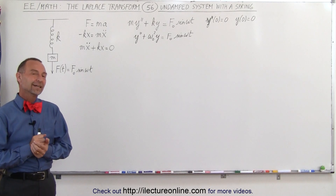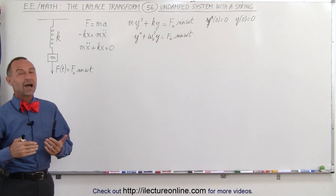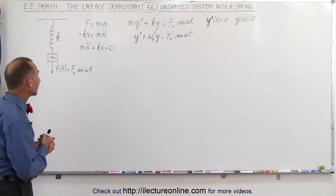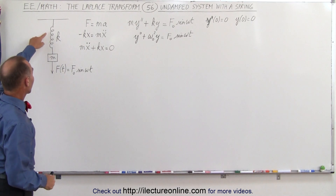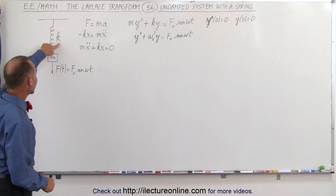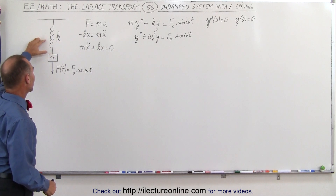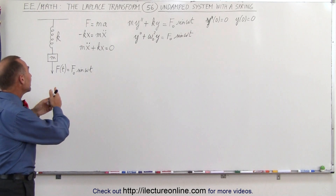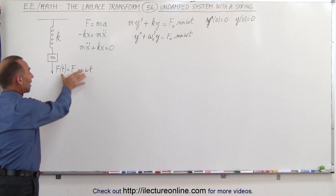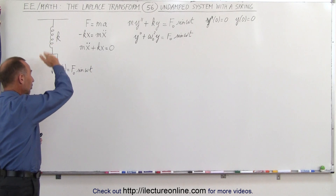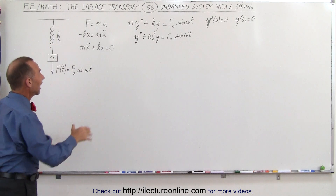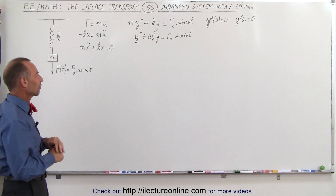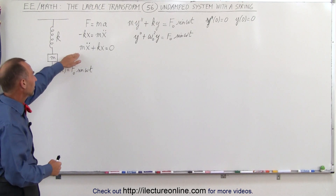Welcome to ElectronLine. In this video we're going to see how practical the Laplace transform can be for an example problem like this. We have a simple spring with spring constant k and a mass suspended from the spring. If the only force acting on it were gravity, we could take this driving force away and the object would simply oscillate back and forth. That equation would not require the Laplace transform — it's easy enough to solve by other methods.